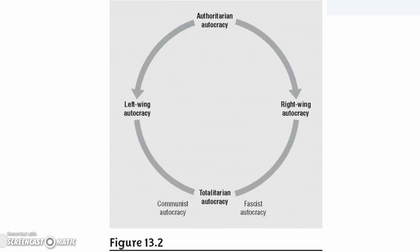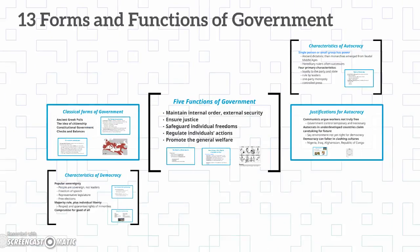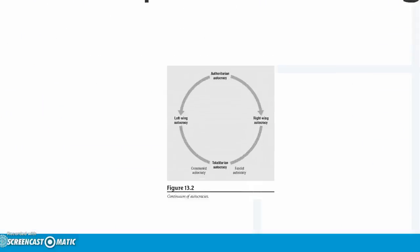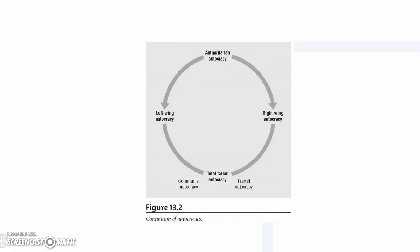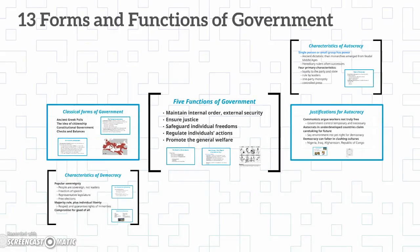Here is a picture of the circle of autocracy. At the top is authoritarian autocracy and at the bottom is totalitarian. On the right you see right-wing autocracy and on the left you see left-wing autocracies. Left-wing autocracies would include communist governments; right-wing autocracies would include fascist or conservative governments. And that is our chapter on the forms and functions of government. I hope you'll read the chapter and I wish you success on the quiz. Thank you.